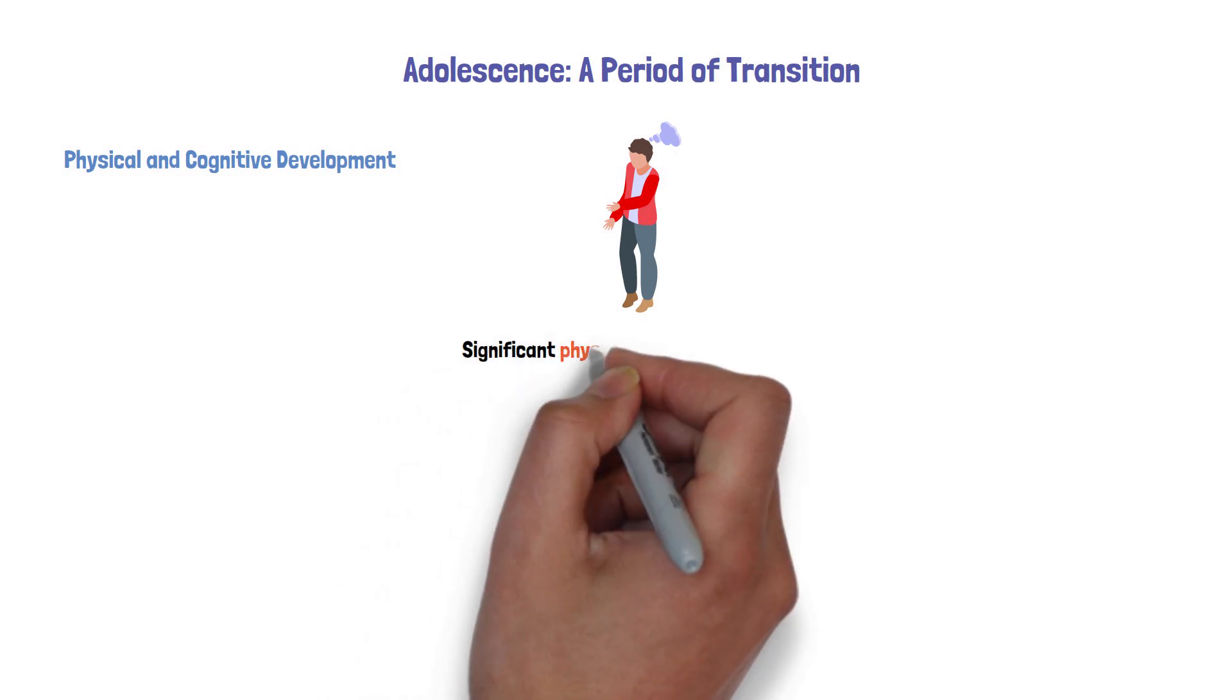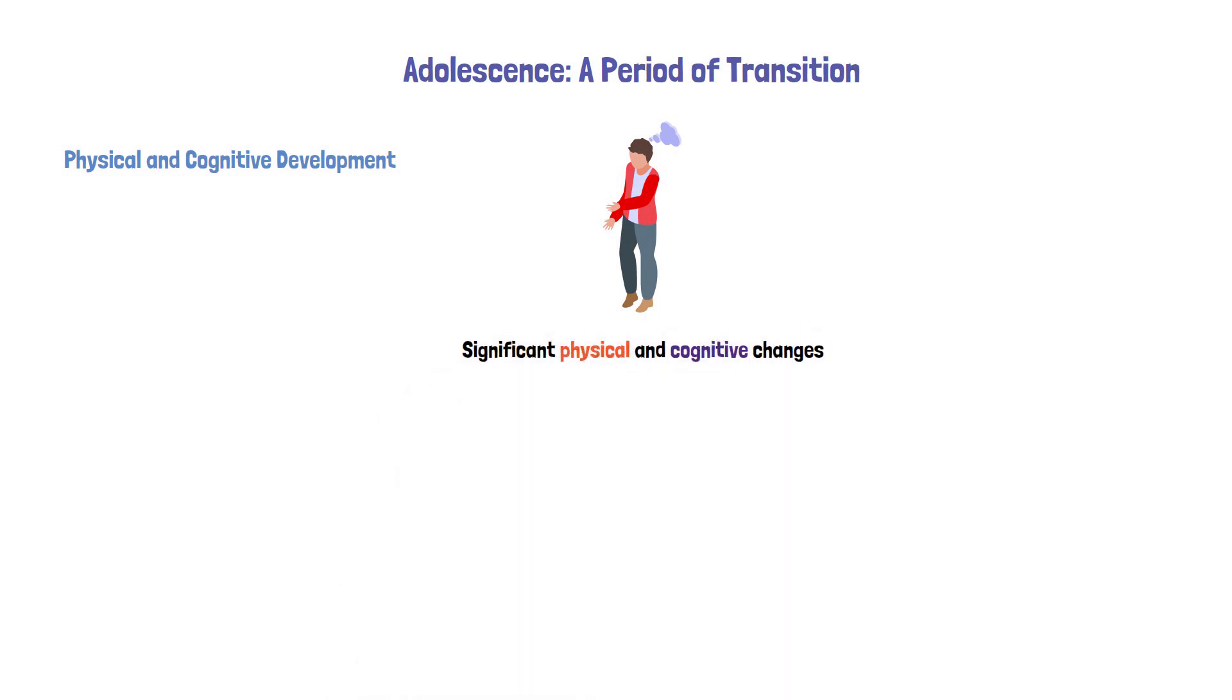Adolescence is a time of significant physical and cognitive changes, marked by the onset of puberty and the maturation of the adolescent brain.